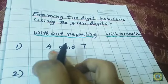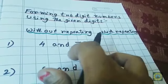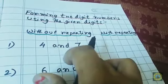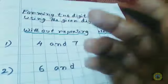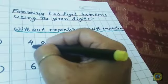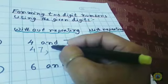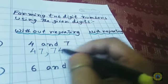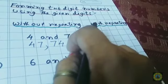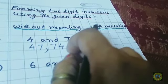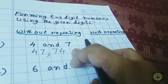So children, first we have four and seven. What you have to do is form two-digit numbers with these two digits, four and seven. The first number will be 47 and the second one 74. Can we make any other number here? No, we can only make two numbers. This is the without-repeating case.